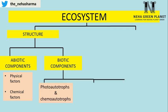The second component in ecosystem is the biotic component. Biotic components are of the following types. First, photo-autotrophs and chemo-autotrophs, which can synthesize food on their own. Plants are photo-autotrophs which utilize sunlight and convert it into food. On the other hand, chemo-autotrophs are certain bacteria which utilize chemicals to make food in their body.